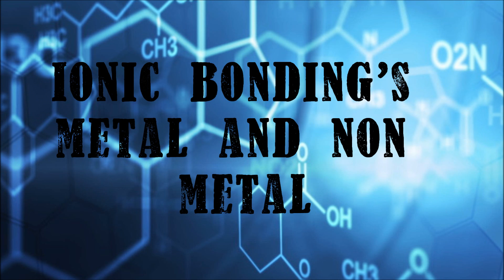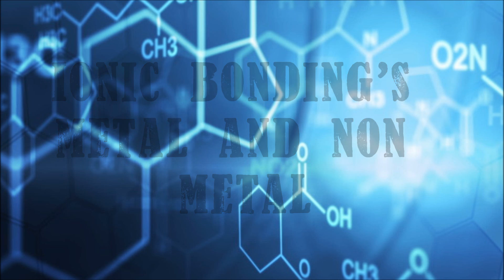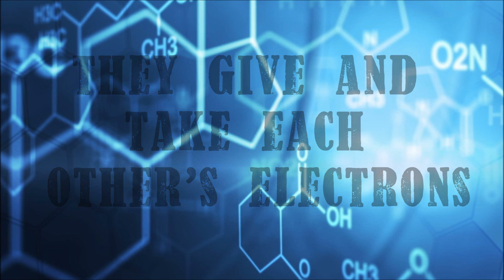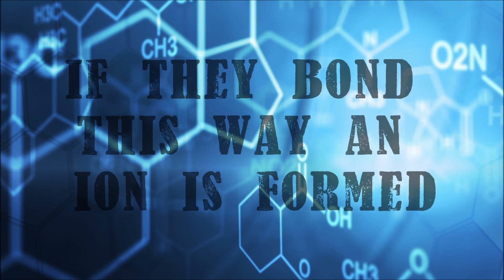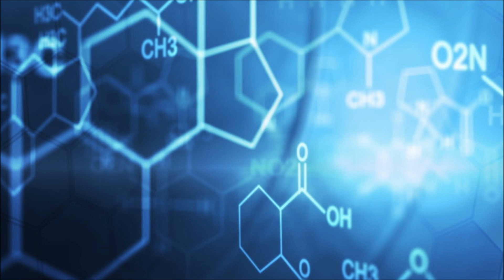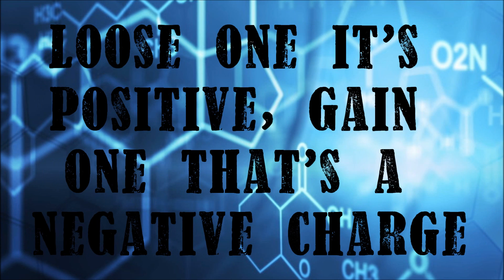Ionic bonding is metal and non-metal. They give and take each other's electrons. If they bond, an ion is formed. Lose one electron, it's positive. Gain one, that's a negative charge.